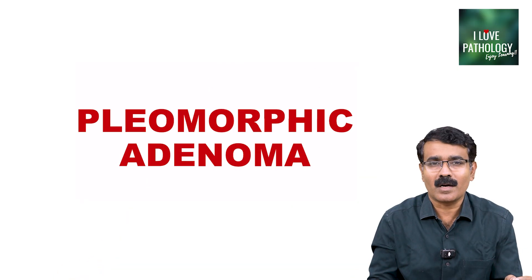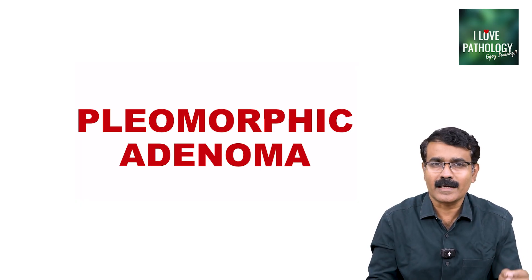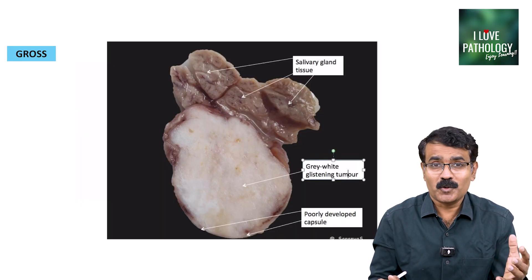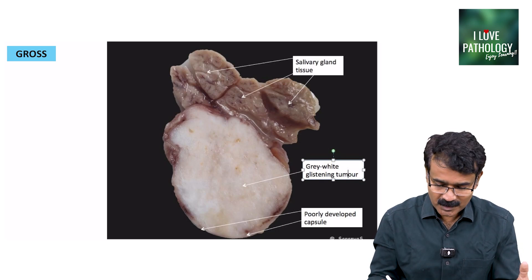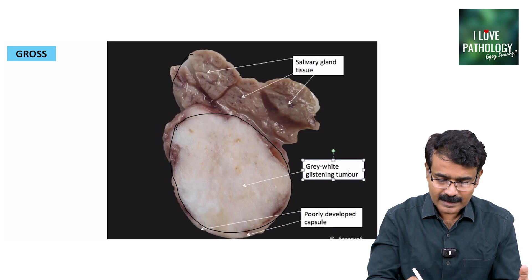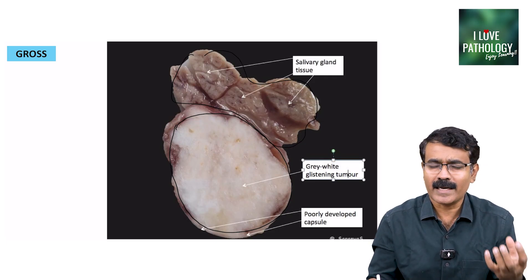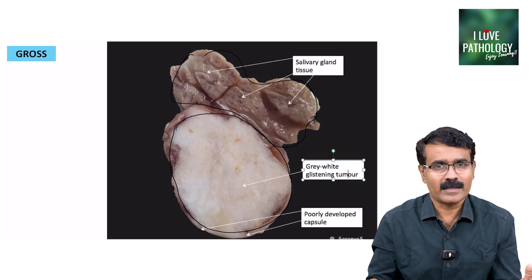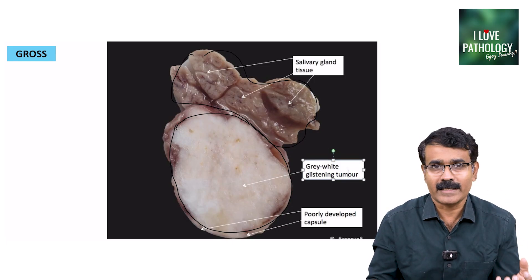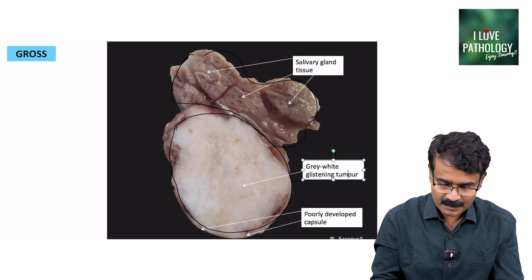The first slide for today is pleomorphic adenoma. This is the most common benign salivary gland tumour. I will show you the gross picture of this tumour. This is a grey-white glistening tumour, and that is the salivary glandular tissue. It's a benign, well-circumscribed tumour, and the most common salivary gland affected is the parotid salivary gland.